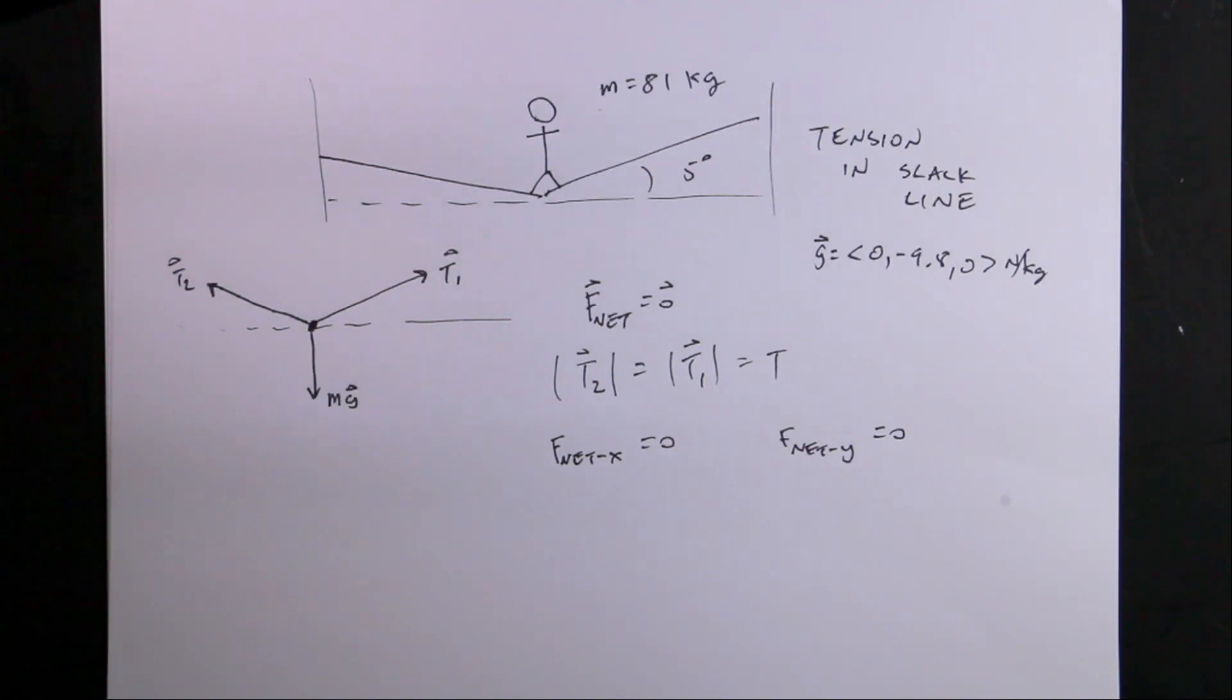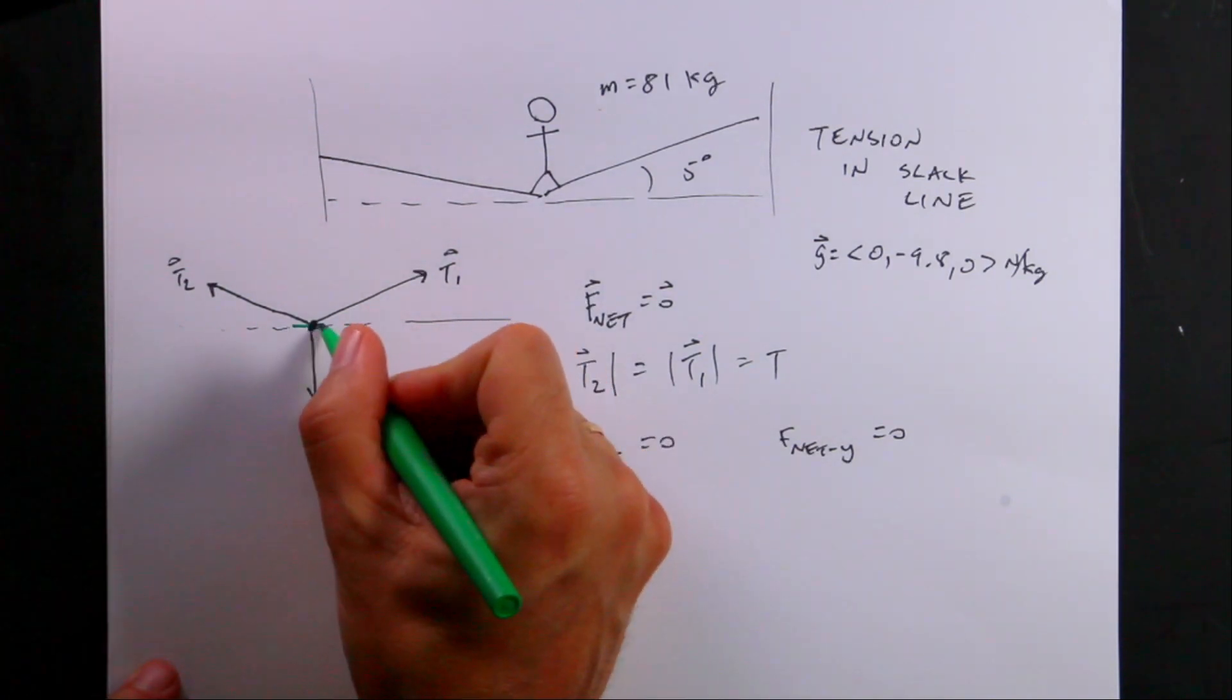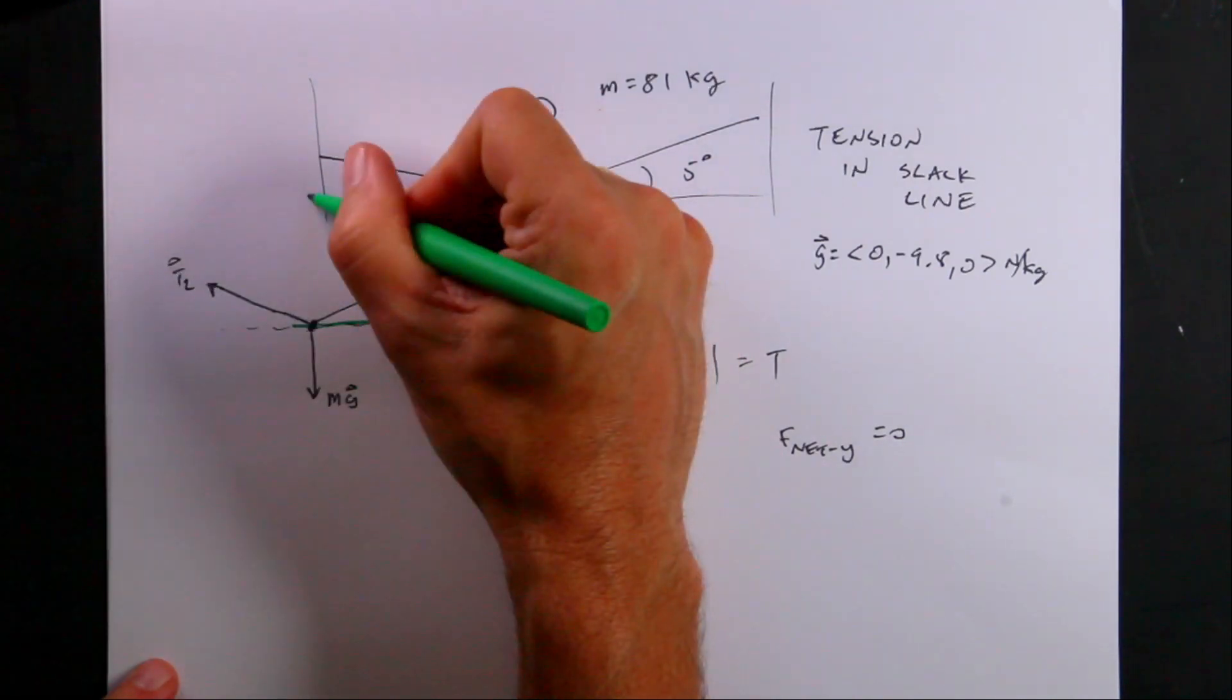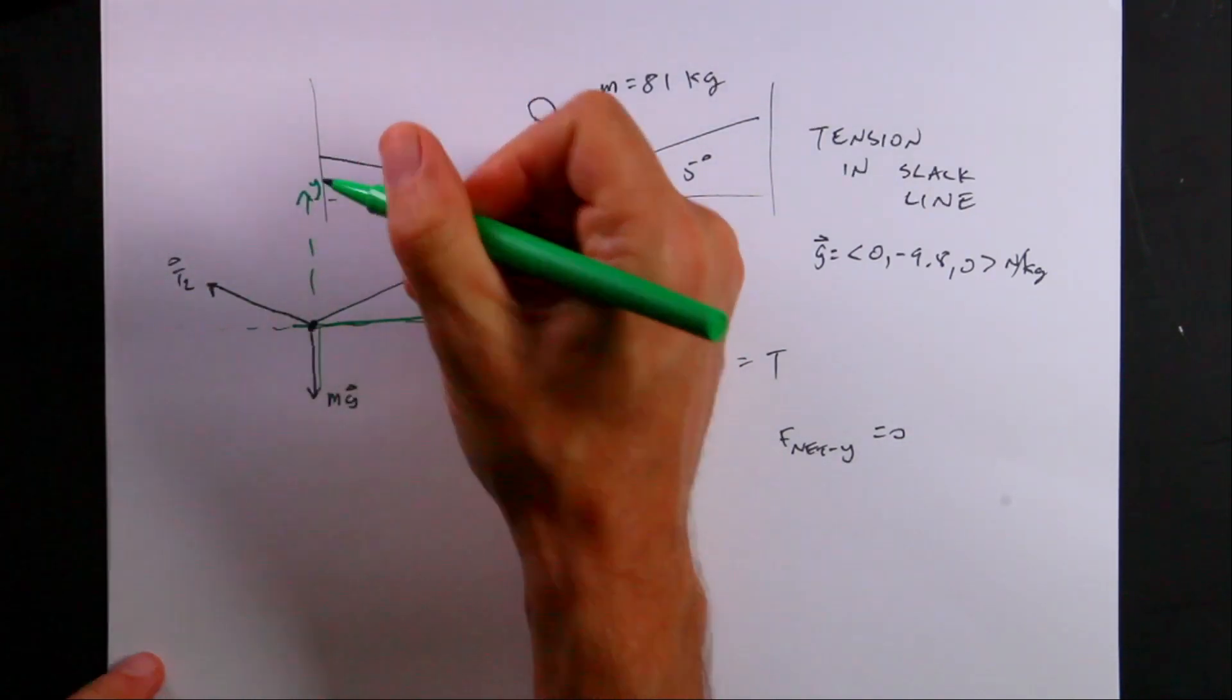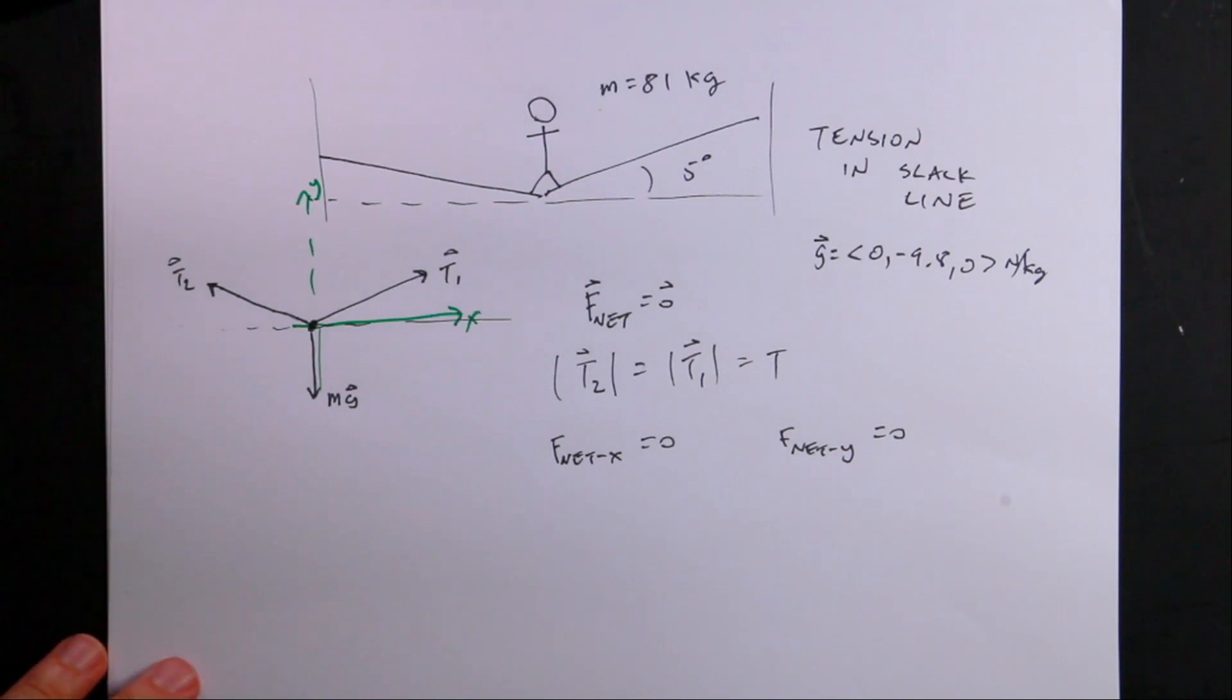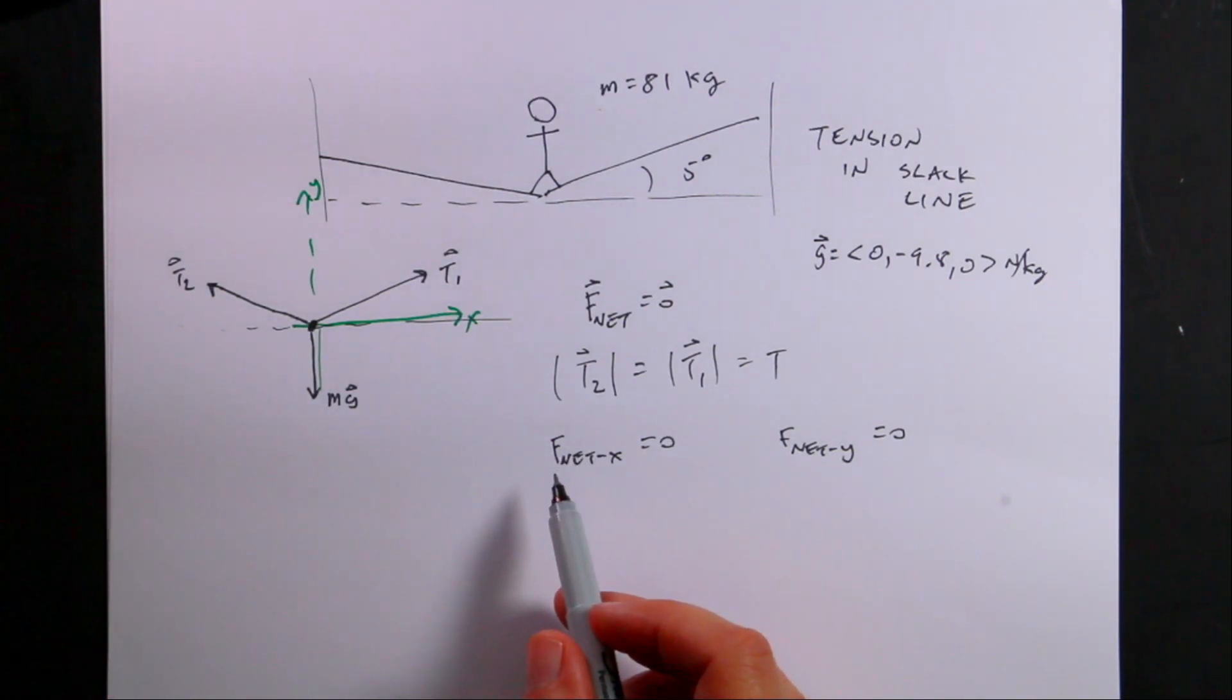But if I do that, I have to know which way my x and y directions are. So I'm actually going to pick this as my x direction and this as my y direction. So now I can do these equations. Let's go ahead and do the f net x.